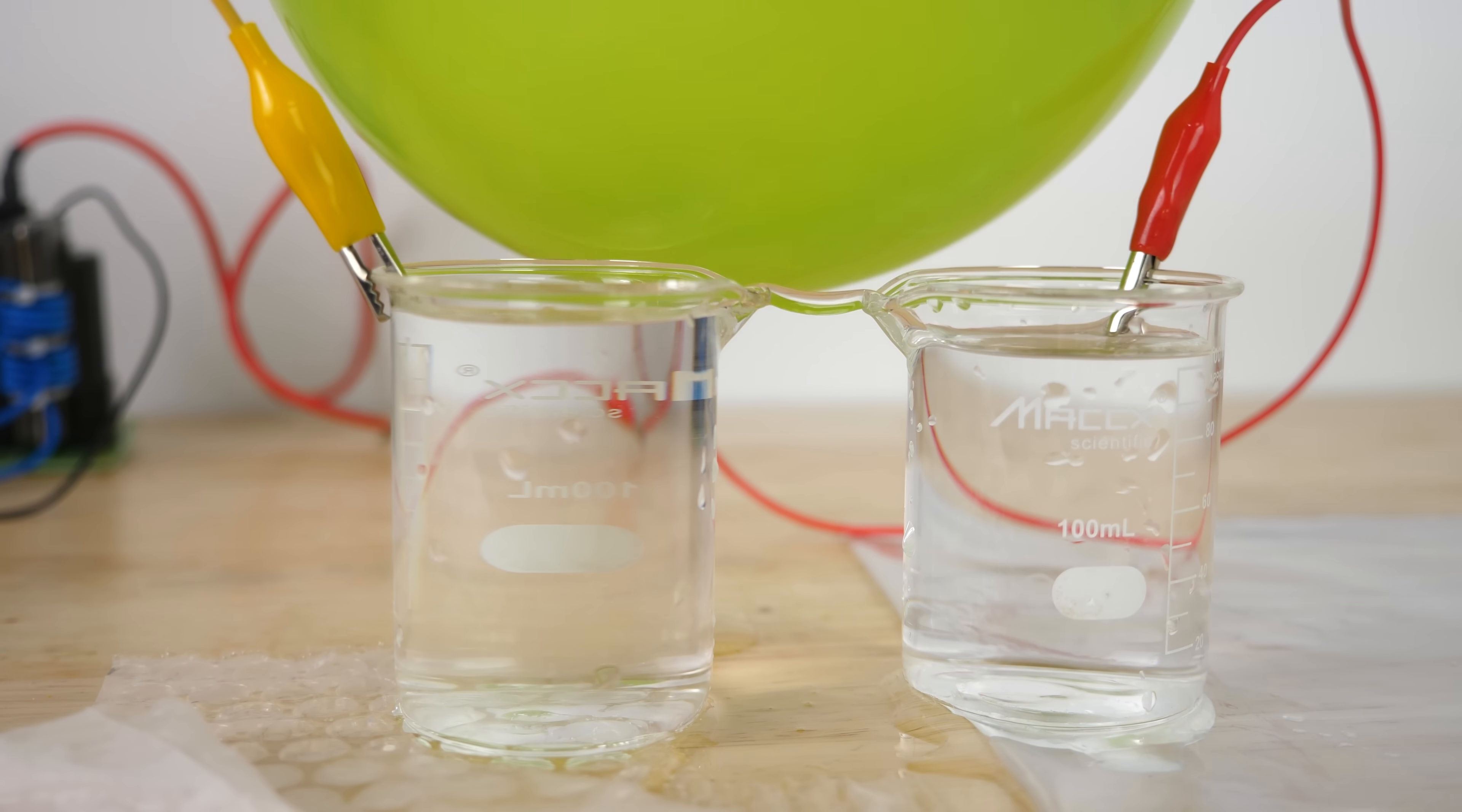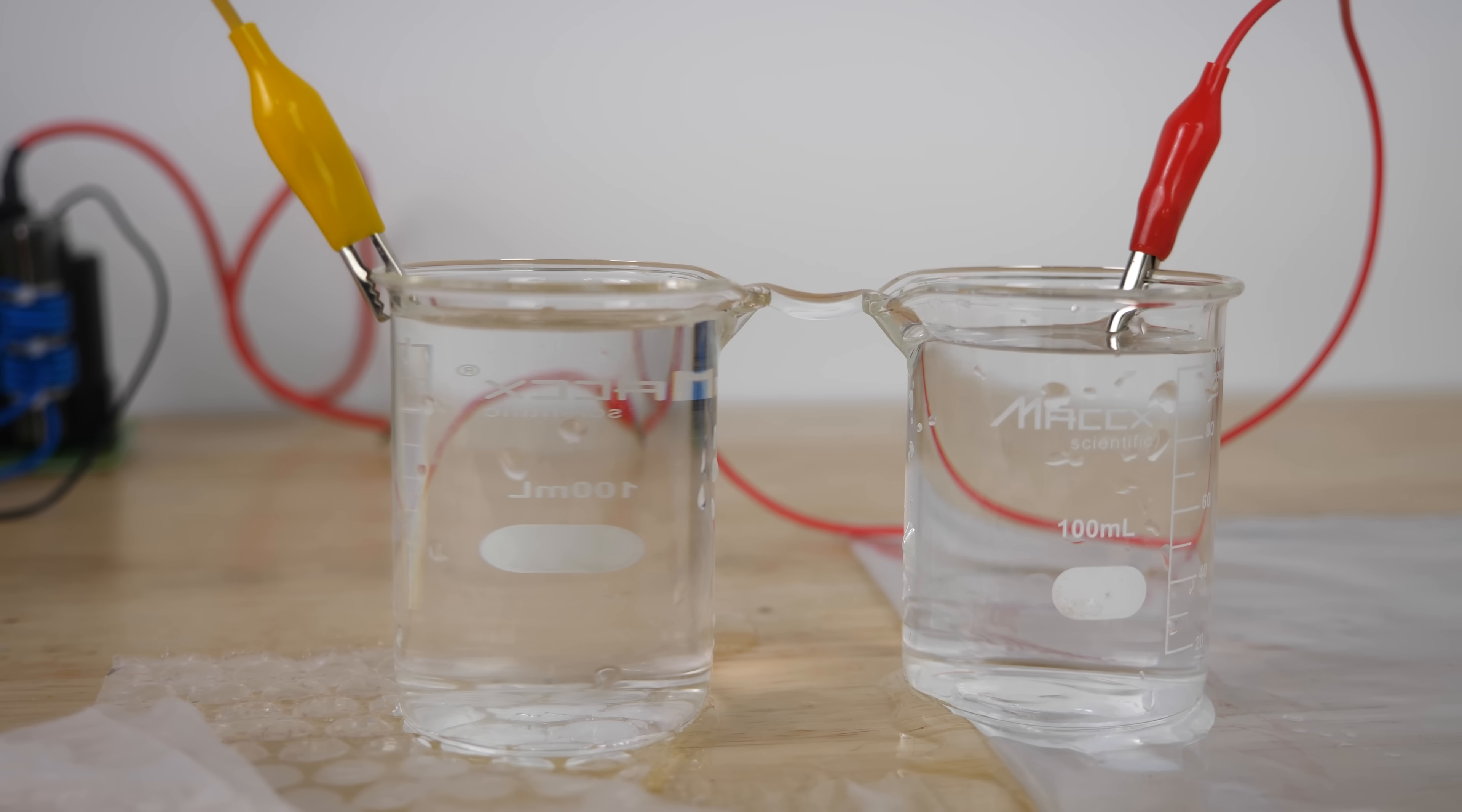As soon as I move the balloon over the water, you can see it empties one beaker and fills the other. Every time I move it closer, it does it a little more. For some reason, this electrostatic charge is causing bulk water flow from one beaker to the next. This could possibly be an interaction with charged nanobubbles or some other interaction that I'm not sure of.